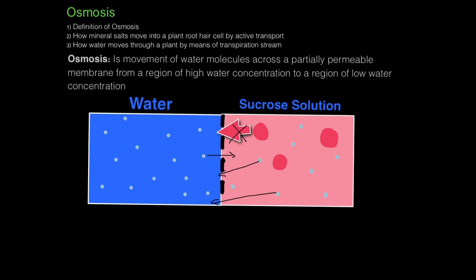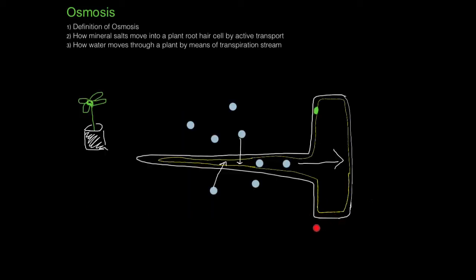Because there are more water molecules on one side than the other, there's a steady net flow of water into the area with fewer water molecules. So from this example, the net movement of water molecules is going in the direction of the sucrose solution.